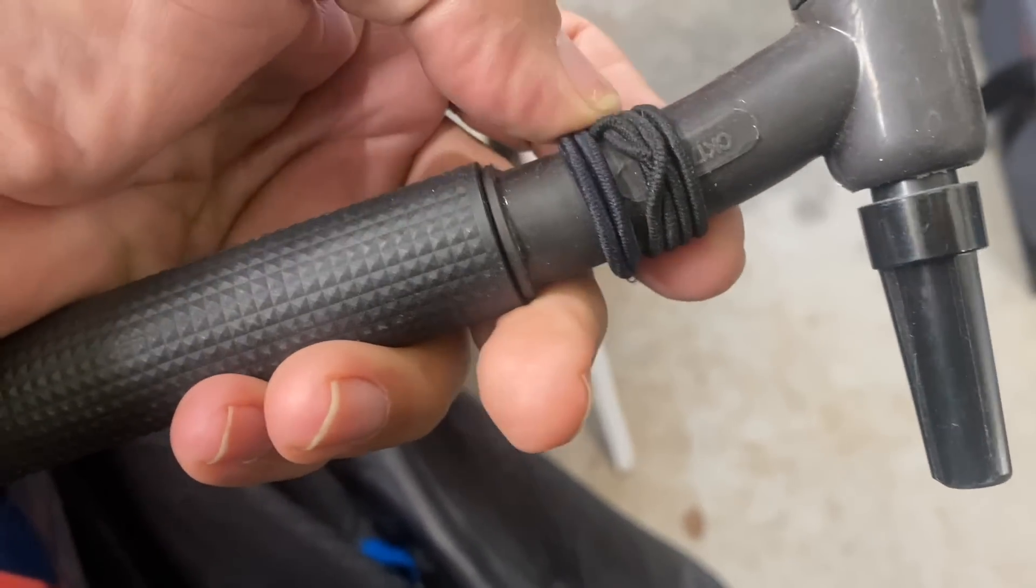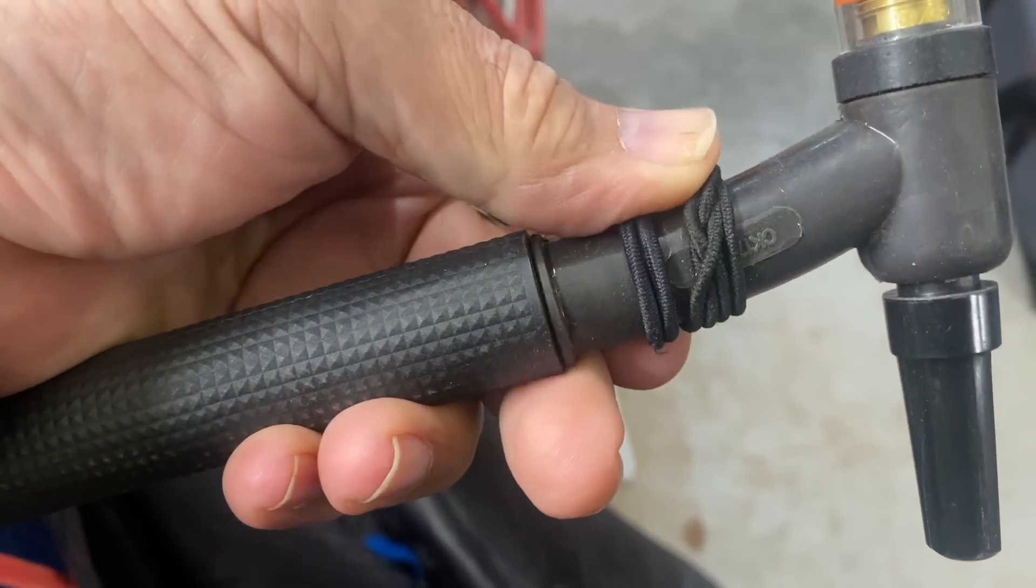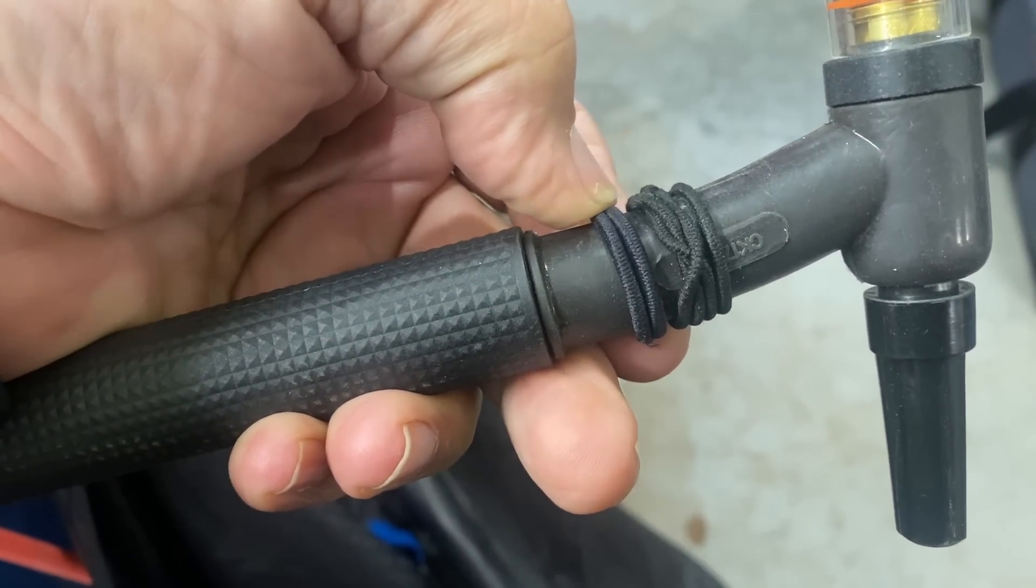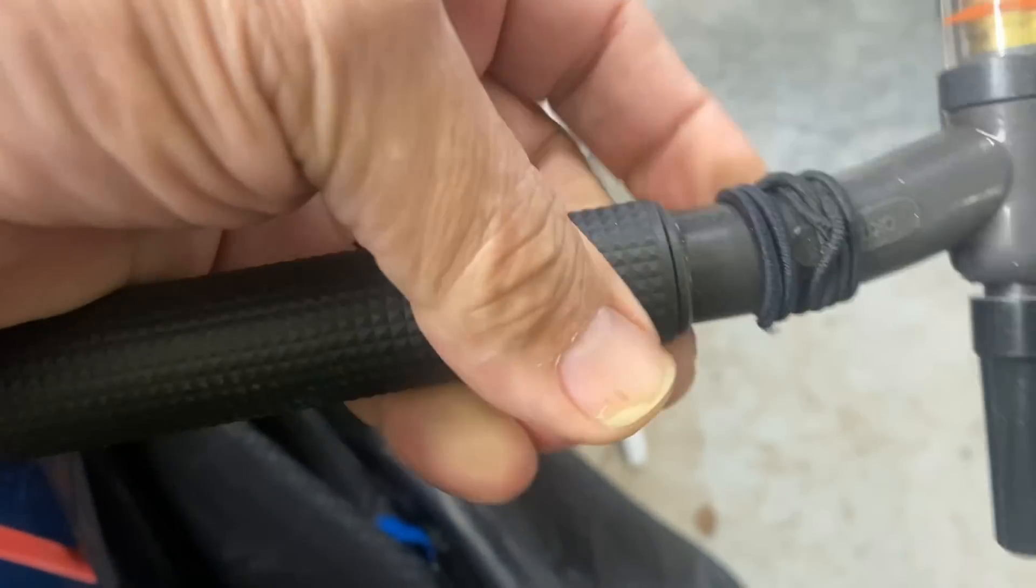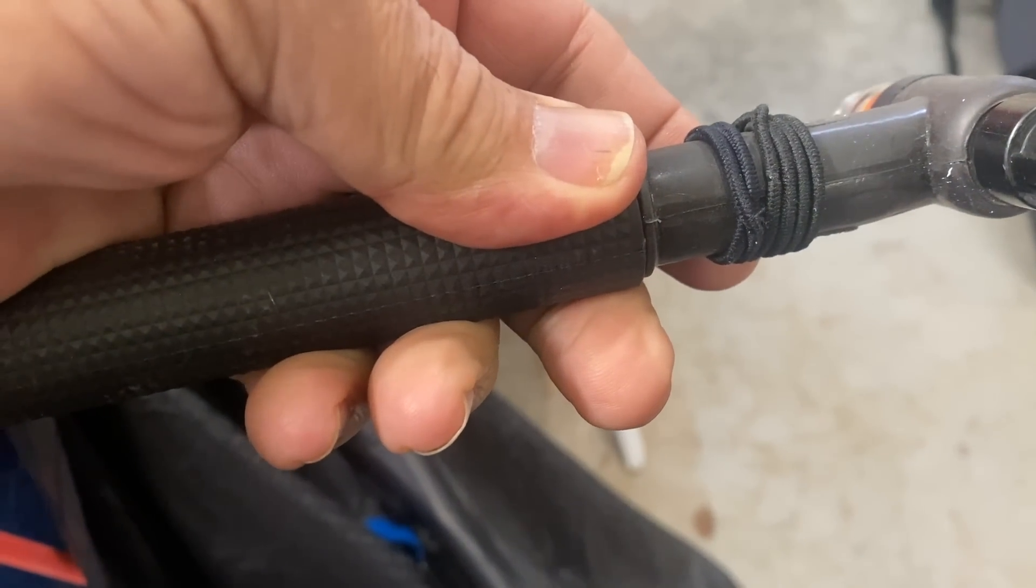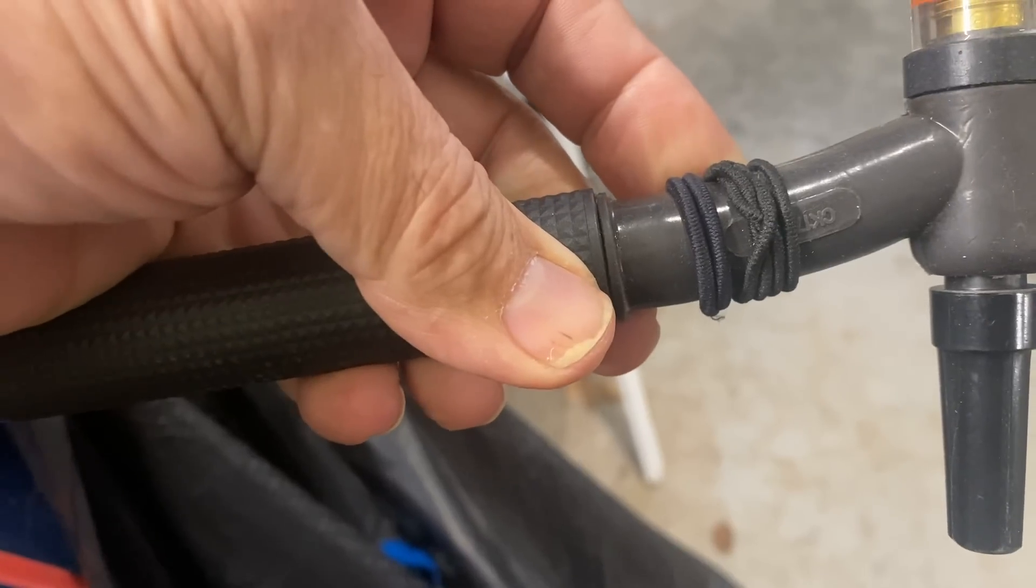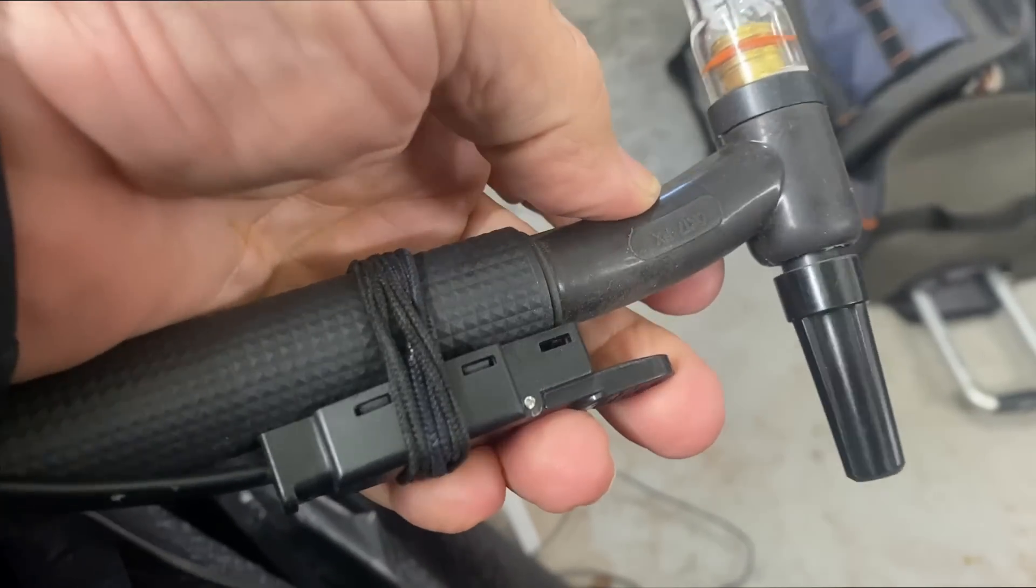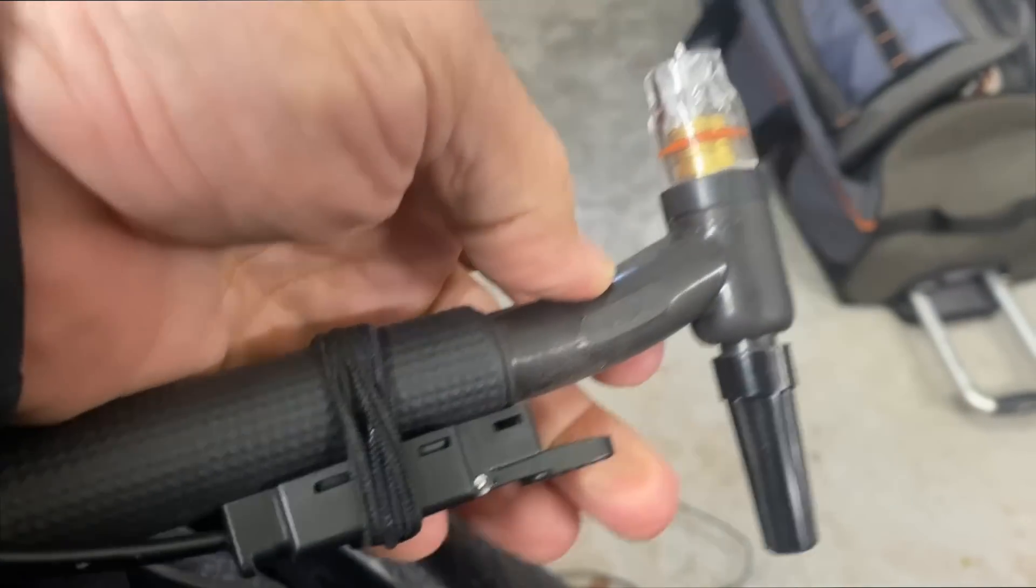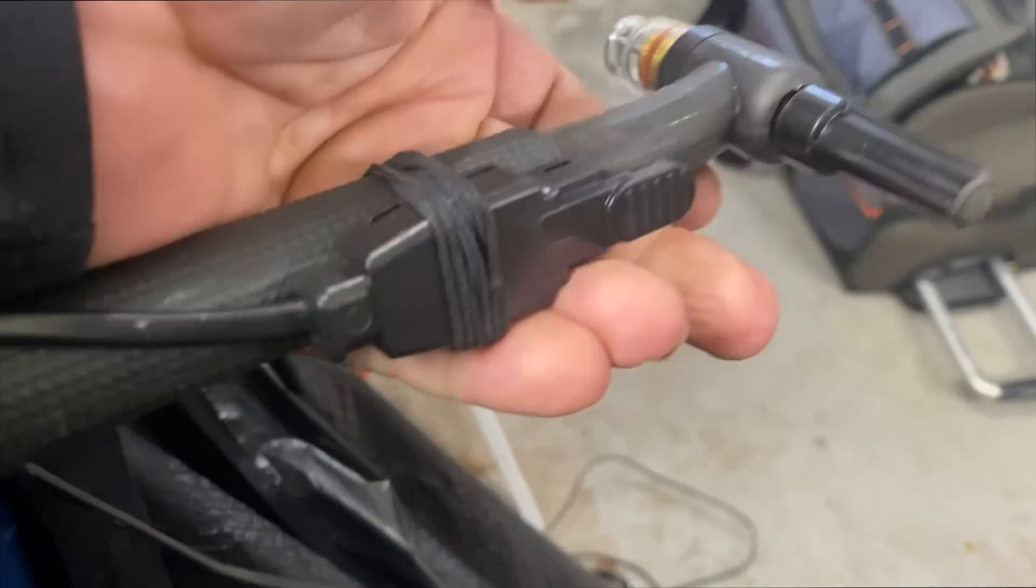Someone asked me recently on a comment what are those things on the neck of your TIG torch? Well they're ponytail holders and the reason I leave them there is sometimes I like to use a torch switch. Normally I'm a foot pedal guy but sometimes it's more convenient to use a switch and this is one of those videos where it's going to be a lot easier because I'm welding quarter inch thick stuff.